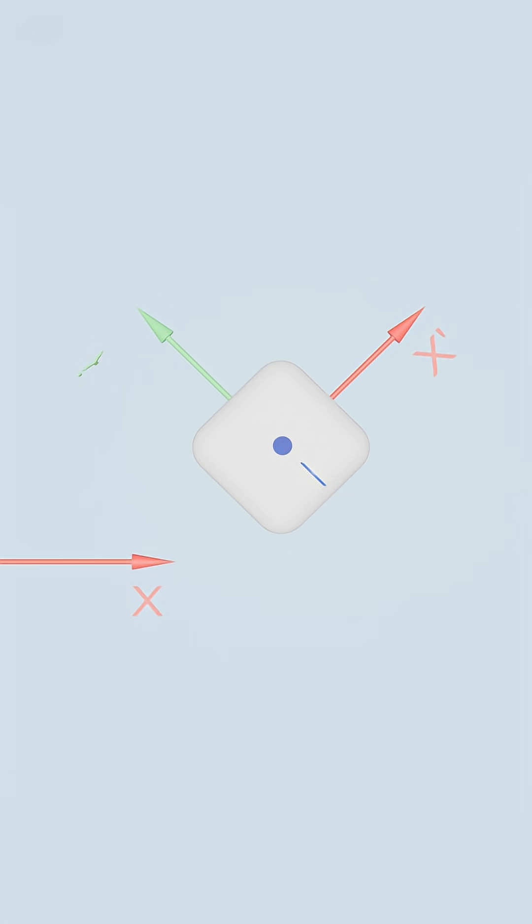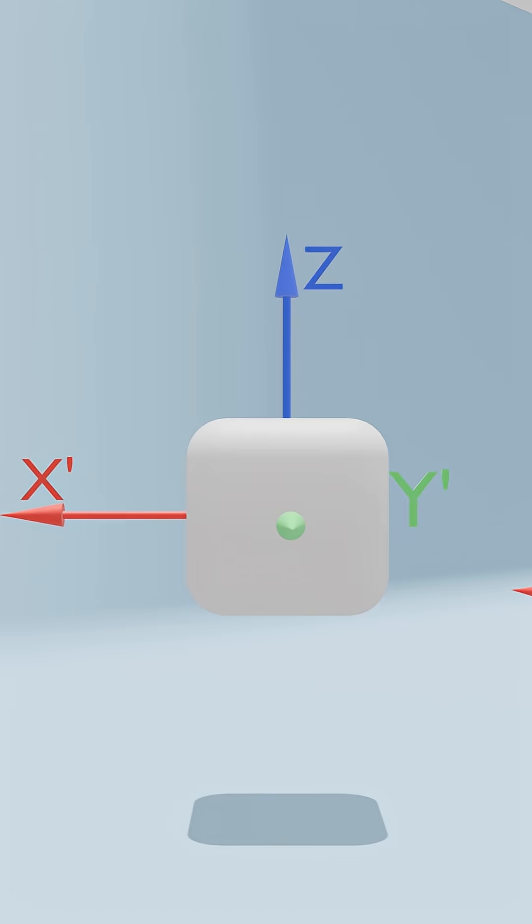We then move on to our second rotation. This time, we rotate the cube about this new y prime axis by an angle theta. This rotation rotates our z and x prime axes, creating a new z prime and x double prime axis.